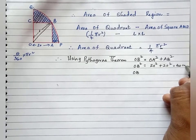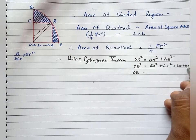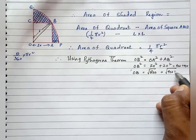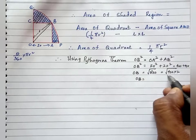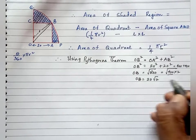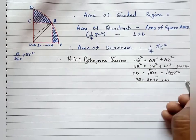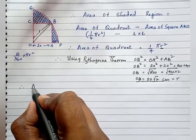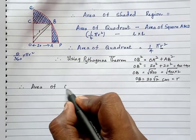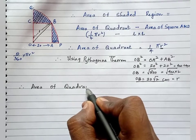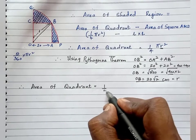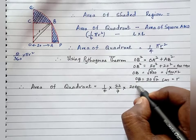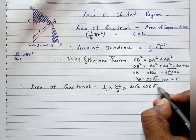OB square equals 20 square plus 20 square, that is 400 plus 400, which gives 800. Therefore OB equals square root of 800. Writing 800 as 400 into 2, square root of 400 is 20, so OB equals 20 root 2. Therefore radius equals 20 root 2 centimeter. Now, area of quadrant equals 1/4 into pi into (20 root 2) squared.